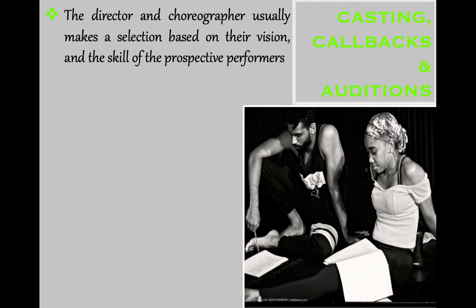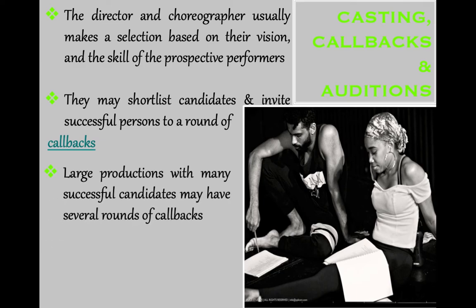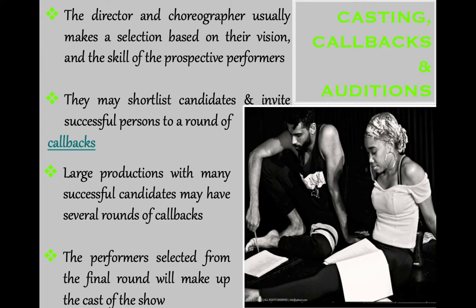The casting process is usually done by the director and the choreographer. They'll look at who auditioned and pick accordingly — for example, making sure the cast is diverse. They'll create a shortlist, and if they have five roles but twenty strong candidates, they'll call those people back for callbacks. This doesn't always happen — sometimes there are no callbacks at all and you go straight into rehearsals — but with big productions there may be multiple rounds of callbacks to narrow down to the final cast.